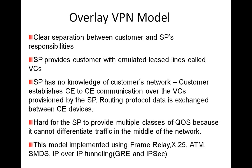In the overlay model, there is a clear separation between customer and service provider responsibilities. The service provider provides the customer with emulated leased lines or virtual circuits. The service provider has no knowledge of the customer network — he's only concerned with providing the leased line and charging for usage. It is the job of the customer to establish communication to all remote sites over these emulated circuits. Routing protocol data is exchanged between customer devices. Billing is purely based on the leased line provided. It is hard for the service provider to provide multiple classes of QoS because it cannot differentiate traffic in the middle of the network.